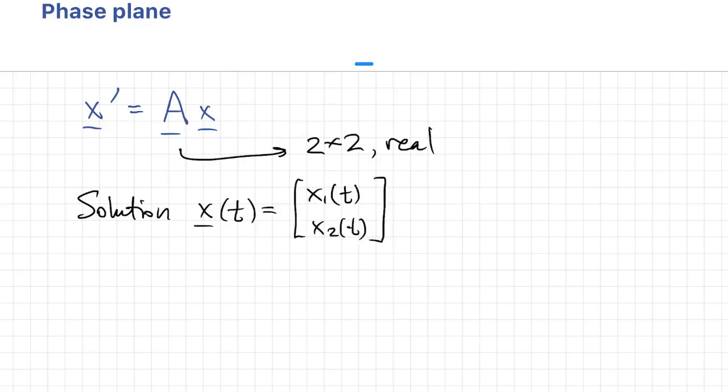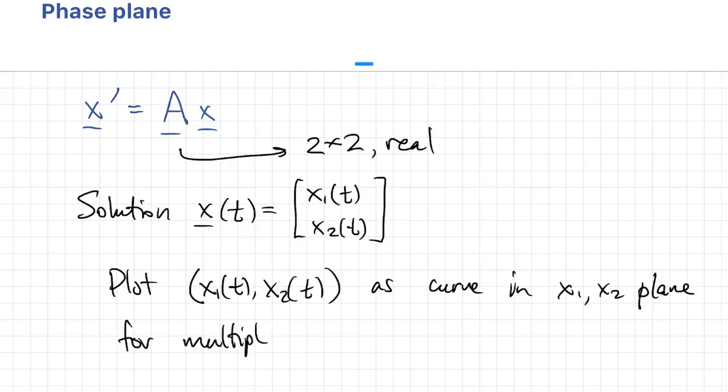So we can make a plot, a parameterized plot, where the parameter is t, or time, and then that becomes a curve in the x1, x2 plane. We'll do that for a bunch of initial conditions to get an idea or a portrait of how the solutions can behave.